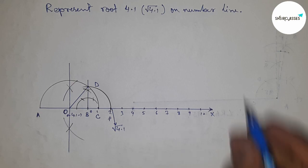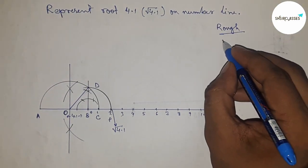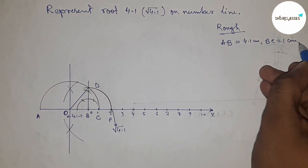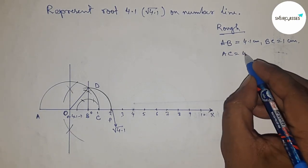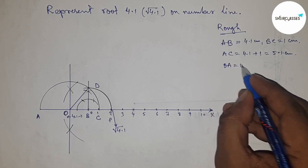Now let's discuss the calculation of root 4.1. Given: AB = 4.1 cm, BC = 1 cm. Therefore, AC = 4.1 + 1 = 5.1 cm.